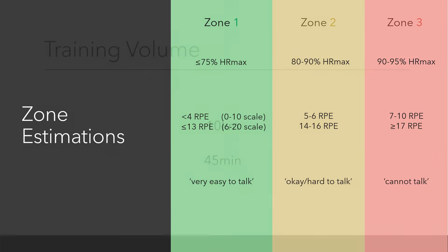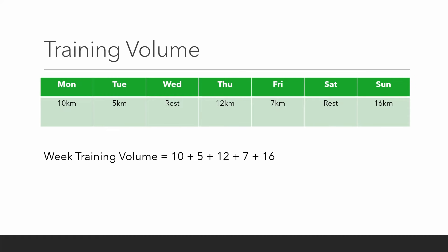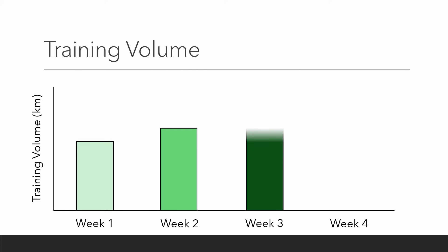We must also acknowledge that training volume is a simple measure of how much. For example, if you were to run 10km in 45 minutes, your training volume could be either 10km or 45 minutes, depending on your preference. For the sake of this video, we measure training volume using distance. We can measure training volume for each training session, and you can also sum up the total amount of training volume you do each week. A typical training program will increase training volume 5–10% a week for 3 weeks, followed by a 1 week recovery where volume is reduced, before starting the next 4 week training block.